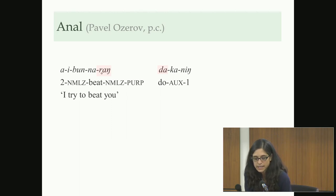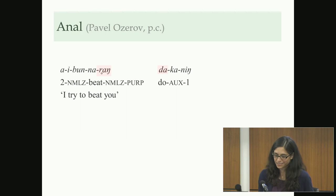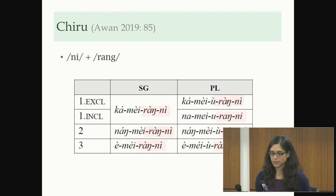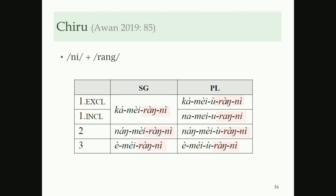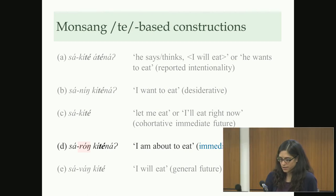In Anna, the quantitative construction for 'trying' works as 'say/think/do in order for X to happen'. Here in Chiru we have a combination of 'rong' with 'ni' as the main affirmative future. In Monsang, there's 'sarongkitena', which I assume contains the same marker originating in this purpose marker, although I'm not sure about the vowel. 'Rong' also appears in Jori — we see it for first person singular and second person plural using this 'rong' construction.